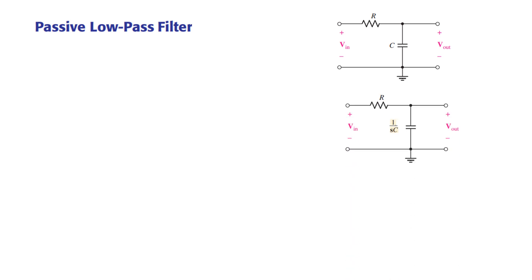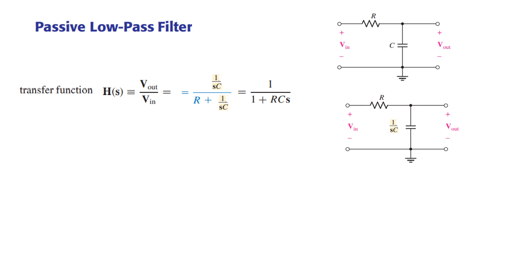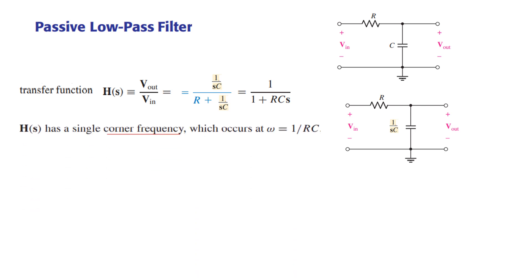This is the basic configuration of a low-pass RC filter. To work in the S-domain we convert the capacitor to 1 over SC. The transfer function is the ratio of output voltage to input voltage. If we assume a current, then V_in equals I multiplied by R plus 1 over SC, and V_out equals I multiplied by 1 over SC. After cancelling I, we get the transfer function of a low-pass filter. The cutoff frequency is given by omega equals 1 over RC.